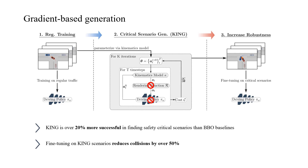KING can generate diverse types of safety-critical situations, one of which being aggressive cut-in maneuvers. In the following video, we show how Transfuser, a state-of-the-art imitation learning-based model for the CARLA driving simulator, handles the situation.